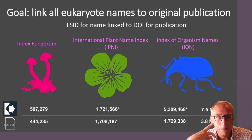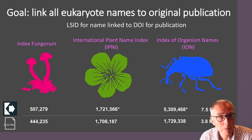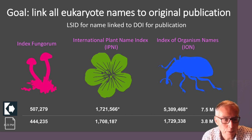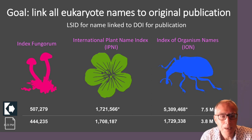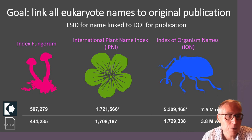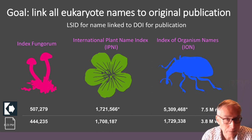What I've been trying to do in the last decade is take taxonomic names from three different sources: Index Fungorum, IPNI, and Index of Organism Names (ION). This covers fungi, plants, and animals, and link that to literature. To give a sense of scale: there are about half a million names in Index Fungorum up to over five million in ION, 7.5 million in total. About 444,000 for Index Fungorum up to 1.7 million in the other databases — 3.8 million in total have some sort of publication linked to them.